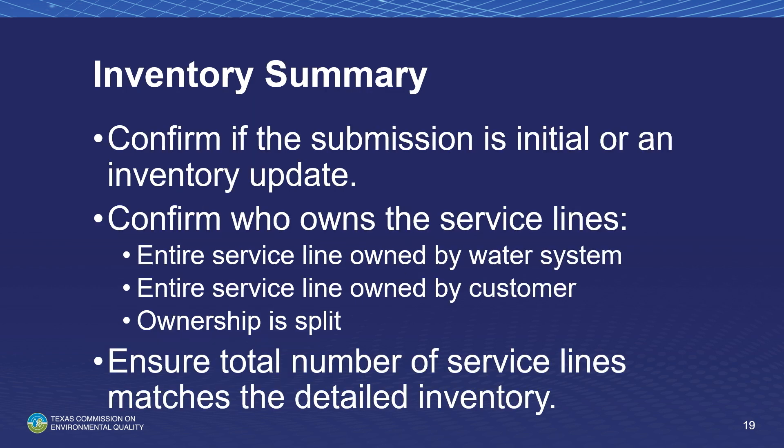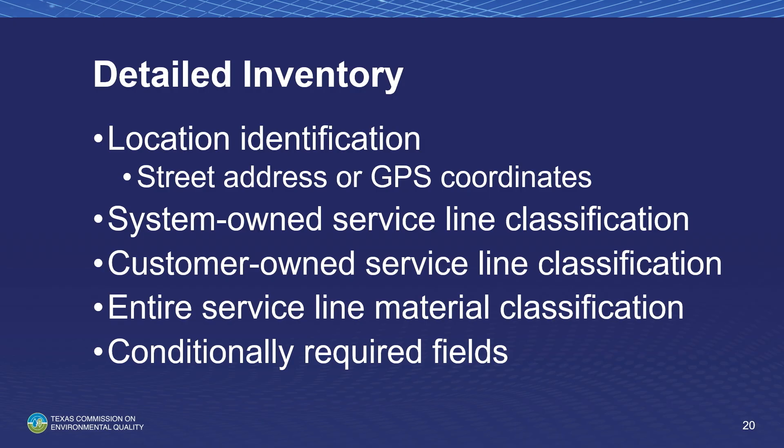Systems must confirm whether the submission is initial or an inventory update. Systems must also confirm who owns the service lines — entirely owned by the water system, entirely owned by the customer, or split ownership. For the detailed inventory portion of form 20943 and the LSLI portal, systems must include: location identification, system-owned service line classification, customer-owned service line classification, and entire service line material classification. Conditionally required fields include whether the system-owned service line was ever previously lead, installation date, building type, and any other lead sources including solders or connectors.